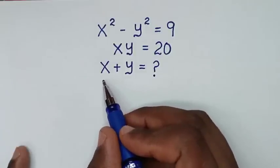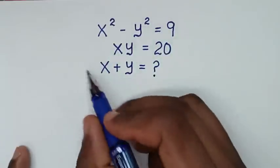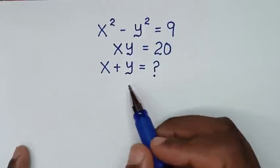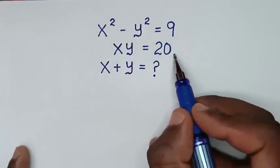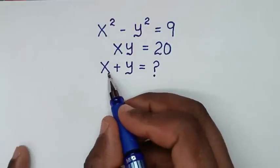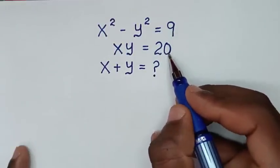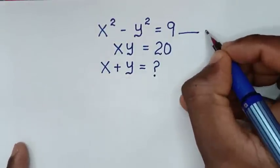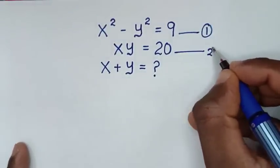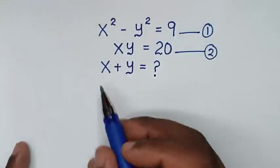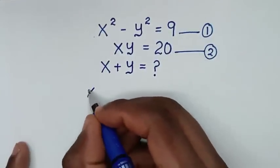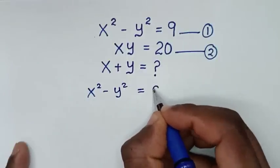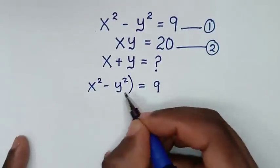Hello, you are welcome to solve this math problem: x squared minus y squared is equal to 9, and x y is equal to 20, to find the values of x plus y from these two systems of equations. In the first step, we'll start by letting this as equation 1 and this as equation 2. From equation 1, which is x squared minus y squared equals 9.